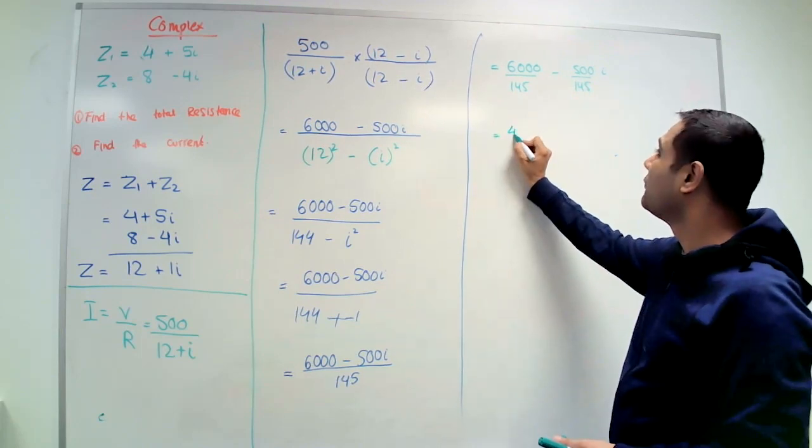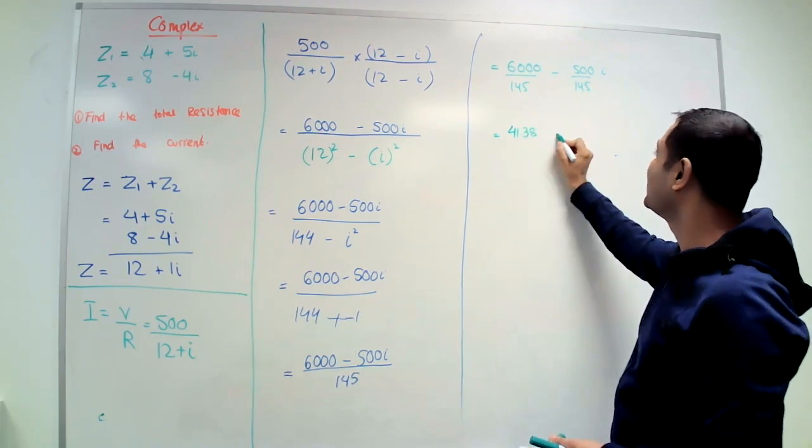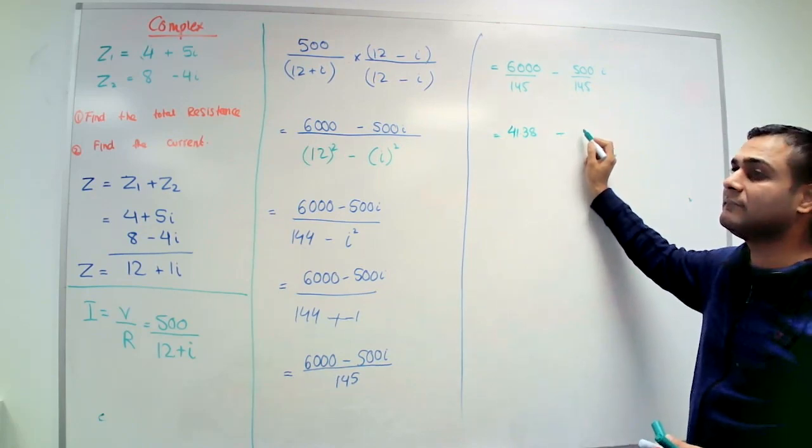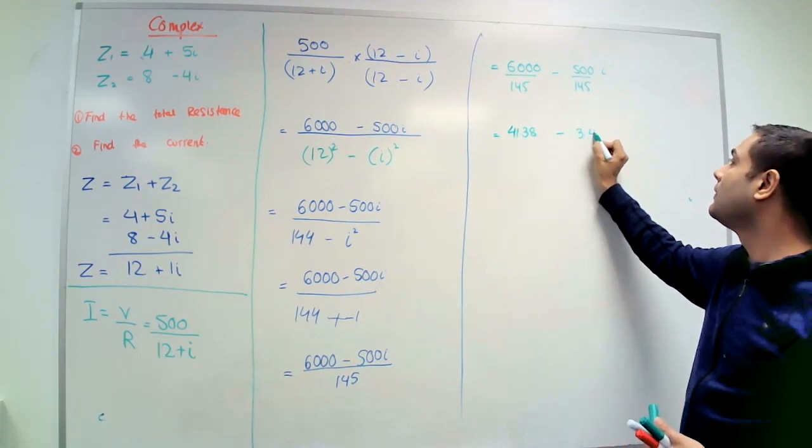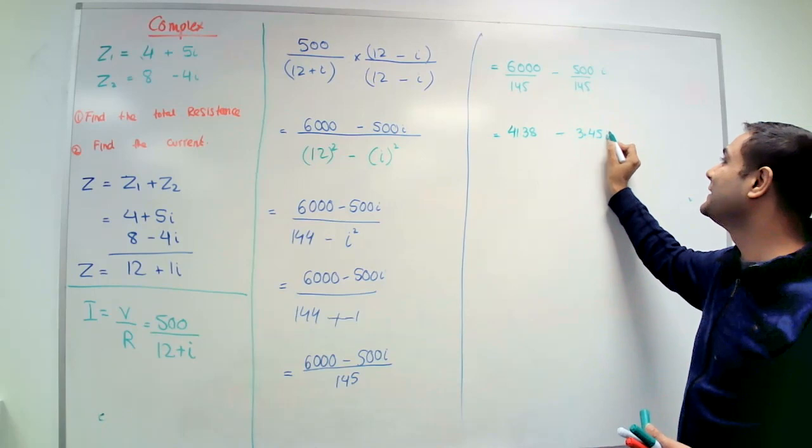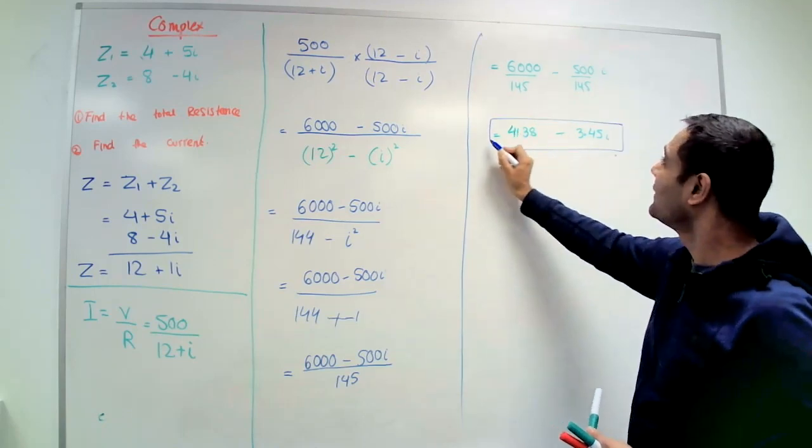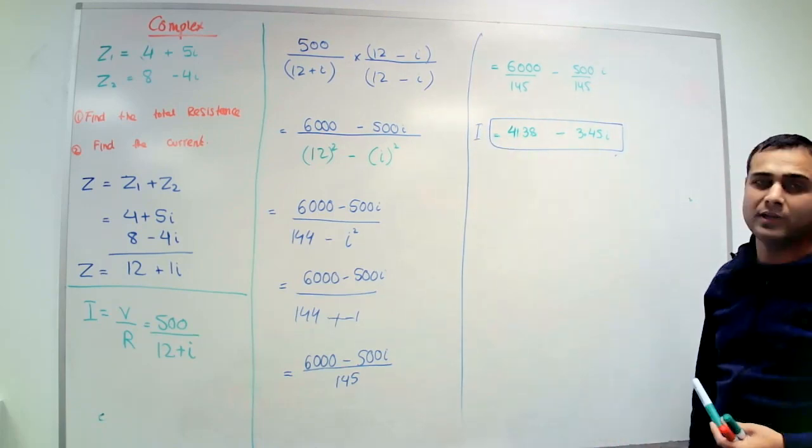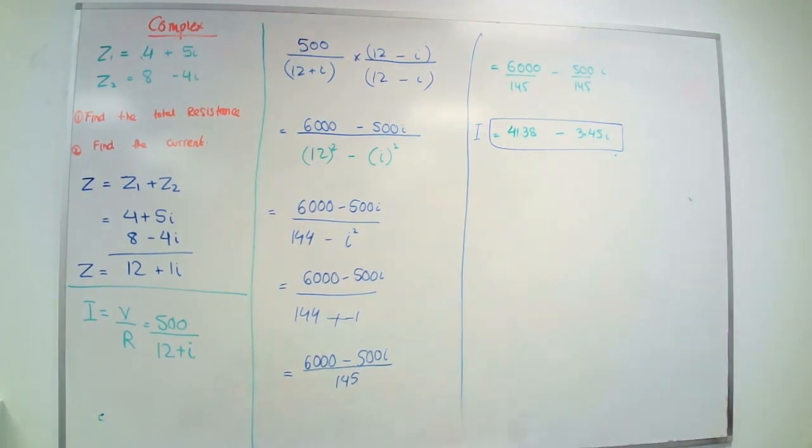41.38, and that one please, 3.45. You're using two decimal places. So that's it, you've just found me the value of the current: 41.38 minus 3.45i. Simple.